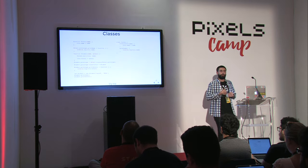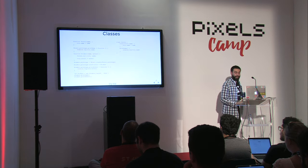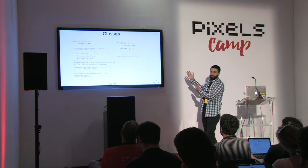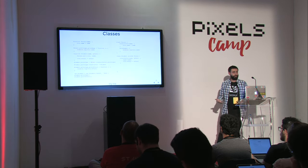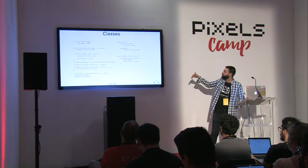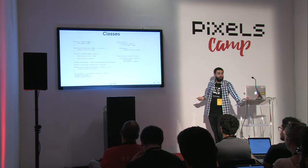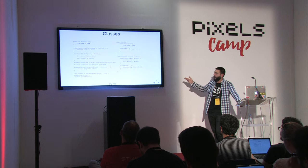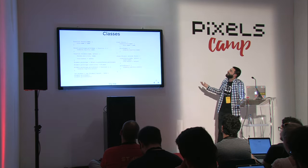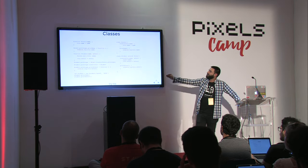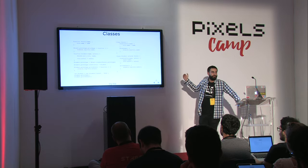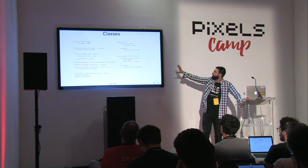ECMAScript 6 makes inheritance trivially easy. You write `class Student extends Person`. For the constructor you call `super()` with the parent's properties. Methods are added directly, and if you need to call a parent method you use `super` again. The code speaks for itself. In ES5 the complexity reached an almost ridiculous level; in ES6 it's straightforward — and these two pieces of code translate to exactly the same thing.